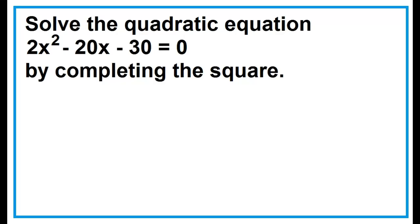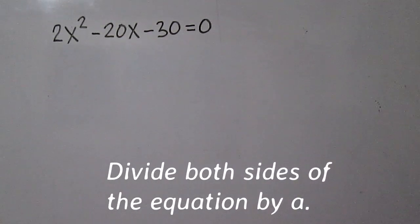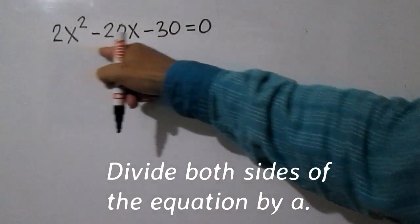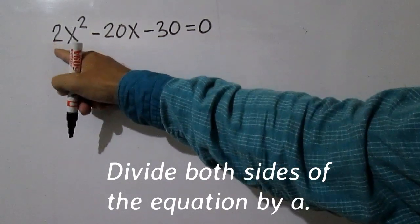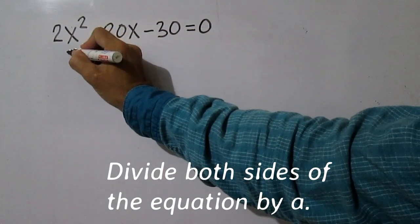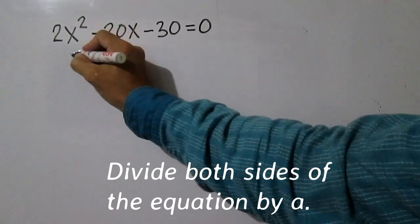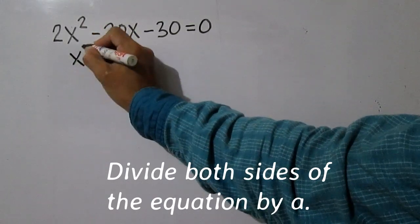Solve the quadratic equation 2x squared minus 20x minus 30 equals 0 by completing the square. This is an example of solving when a is greater than 1. When a is greater than 1, divide both sides of the equation by a. Since a is equal to 2, divide both sides by 2.